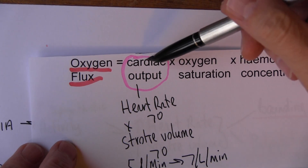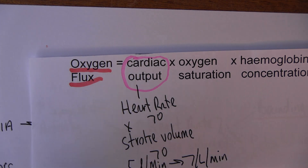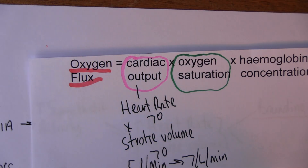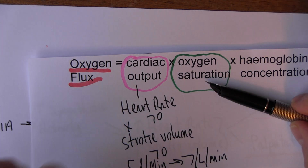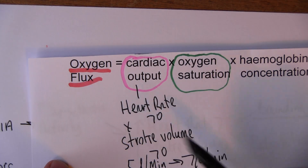Oxygen flux is cardiac output multiplied by oxygen saturations. The more saturated the blood — oxygen saturations describe the proportion of the haemoglobin that is saturated — the nearer 100% that is, the more oxygen is being circulated around. So increasing oxygen saturations will increase oxygen flux, and increasing cardiac output will also increase oxygen flux.